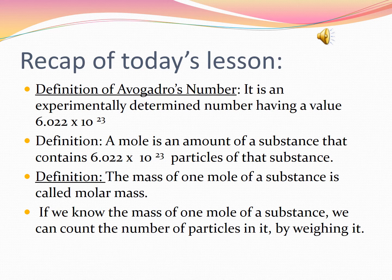At the end of the lesson, let us revise the important concepts we learned today. Avogadro's number is an experimentally determined number having a value 6.022 × 10²³. A mole is an amount of a substance that contains 6.022 × 10²³ particles of that substance. Molar mass is the mass of one mole of a substance. And if we know the mass of one mole of a substance, we can count the number of particles in it by weighing.